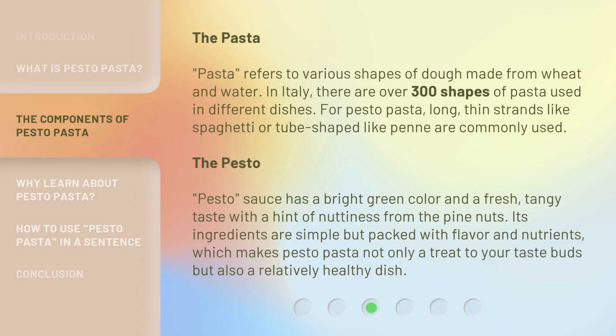Pasta refers to various shapes of dough made from wheat and water. In Italy, there are over 300 shapes of pasta used in different dishes. For pesto pasta, long thin strands like spaghetti or tube-shaped like penne are commonly used.